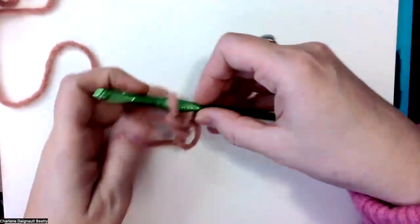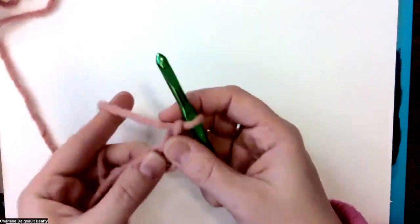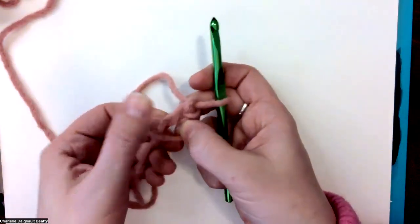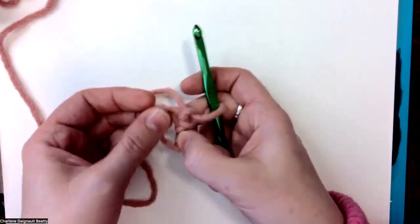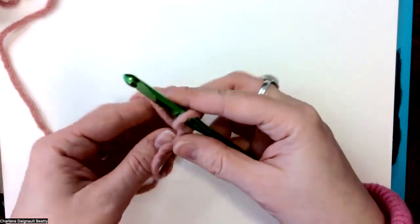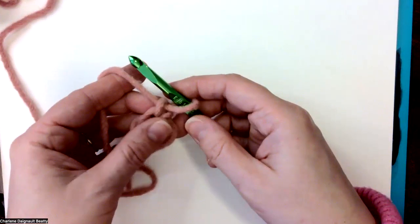Okay, so I have chained two. Now I'm going to do three double crochets inside of this hole. So I'm kind of losing it a little bit. We're going to do, you can turn your work, you can leave the tail down here if you want, but I'm going to keep it this way.